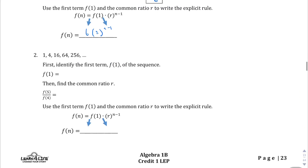Question number 2: identify the first term. The first term is right here — it's just 1. The common ratio is the second term divided by the first term, which is 4 divided by 1, giving us a common ratio of 4. When we write out the explicit rule based on that formula, the first term was 1 and the common ratio was 4, so f of n equals 1 times 4 to the power of n minus 1.